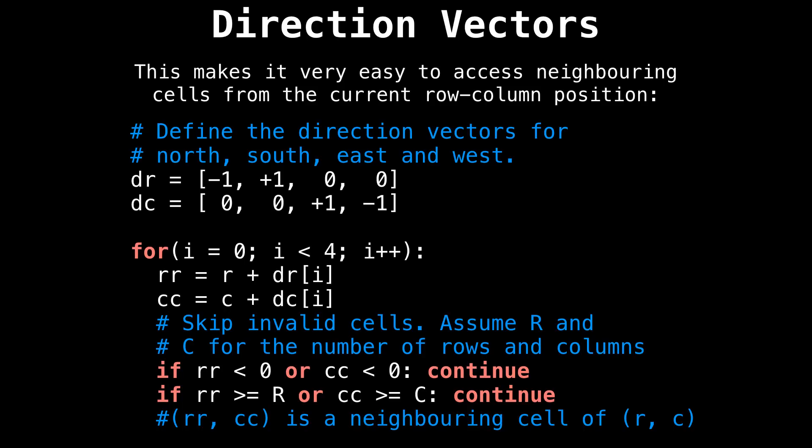First define the direction vectors for north, south, east, and west broken down into their row-column components. Then what we want to do is loop over each direction vector and add it to the current position. Here I iterate i from zero to four non-inclusive because we only have four directions, then add the row direction to the current row to make rr the variable representing the new row, and then add the column direction to the current column to make cc the new column position. So the new position on the grid rr, cc is an adjacent cell.